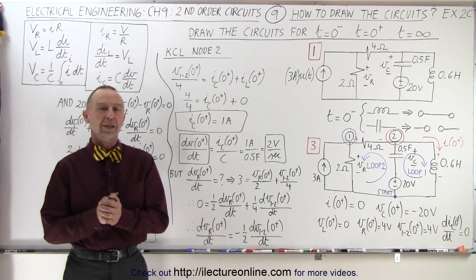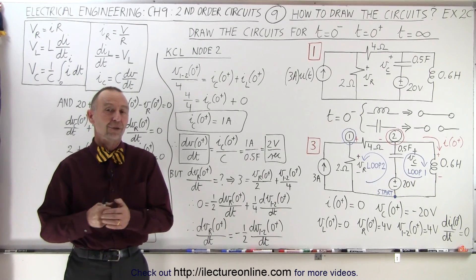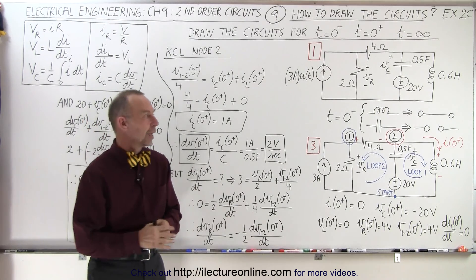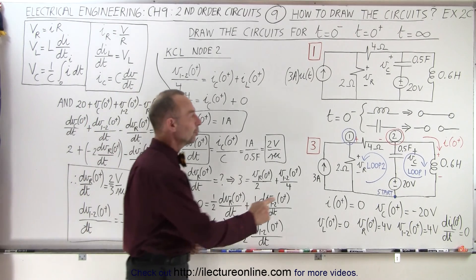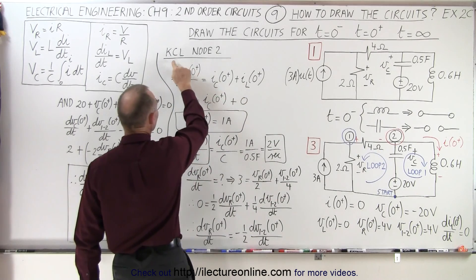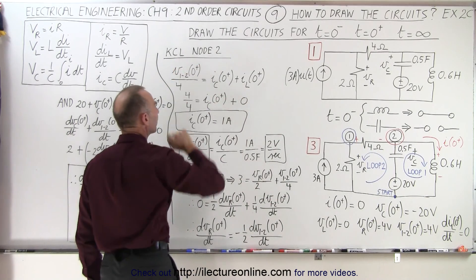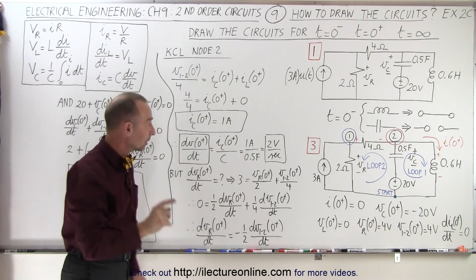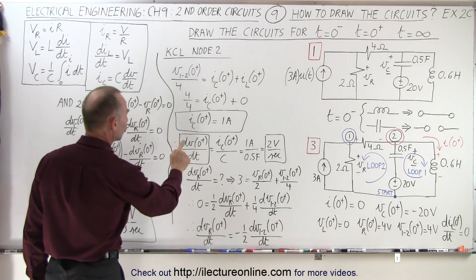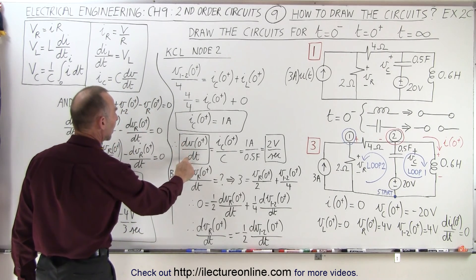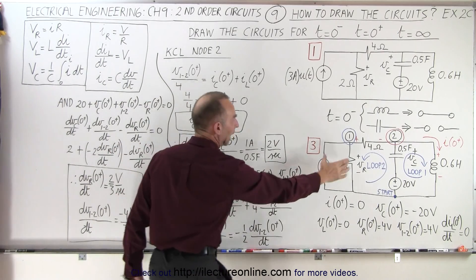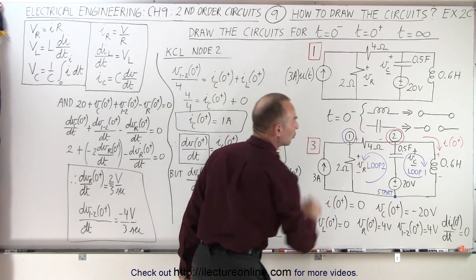Welcome to Electrum Online. This is the third video on this particular problem. We're going to continue with node number 2. We're going to try the KCL node method at that location to calculate the current through the capacitor and the change in voltage with respect to time across the capacitor, across the resistor, and between the two nodes.